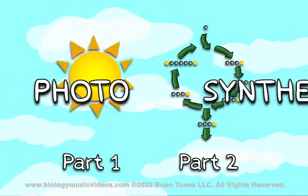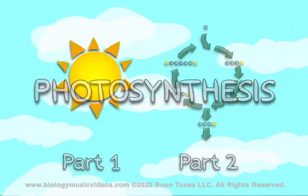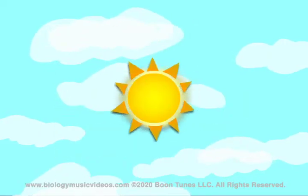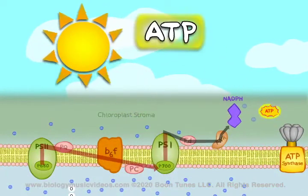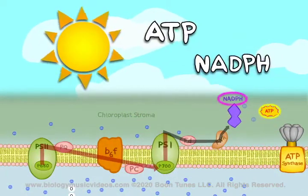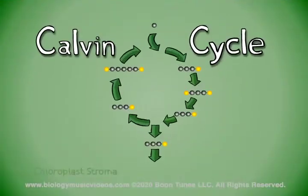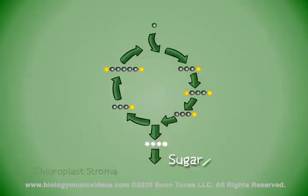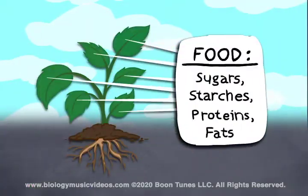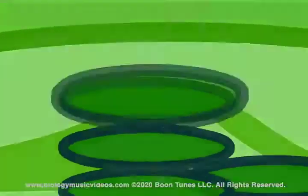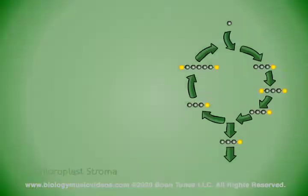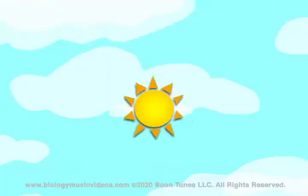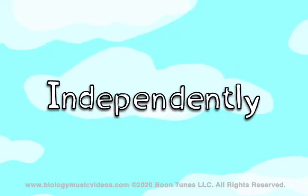The light reactions, or part one, use radiant energy from the sun to photo-electrically generate ATP and NADPH. The Calvin Cycle, or part two, uses those products plus CO2 to make a sugar or saccharide from which the plant's food is derived. Follow along and you will see how the sugar is made cyclically — you'll see just how this process is done, independently of the sun.